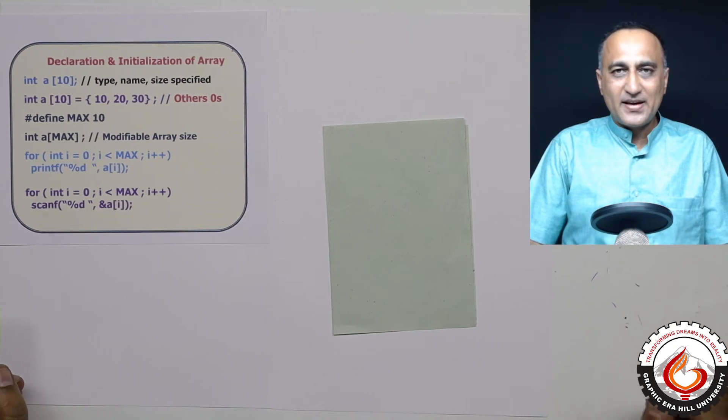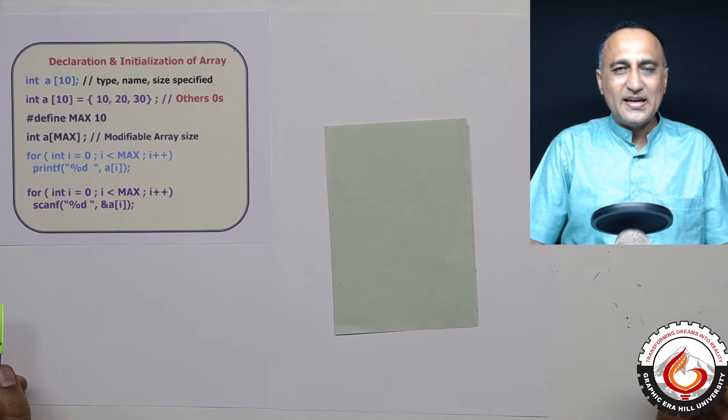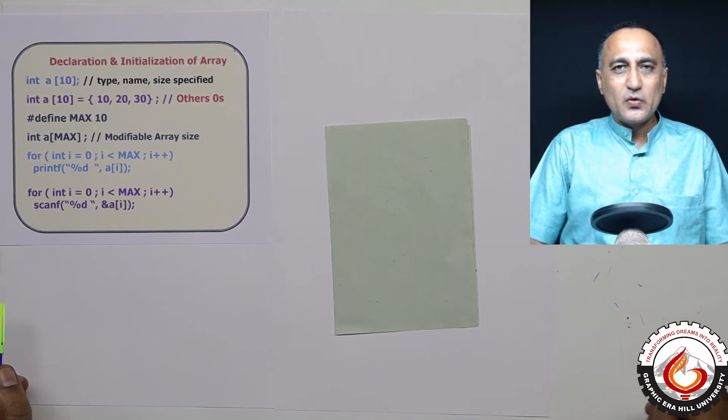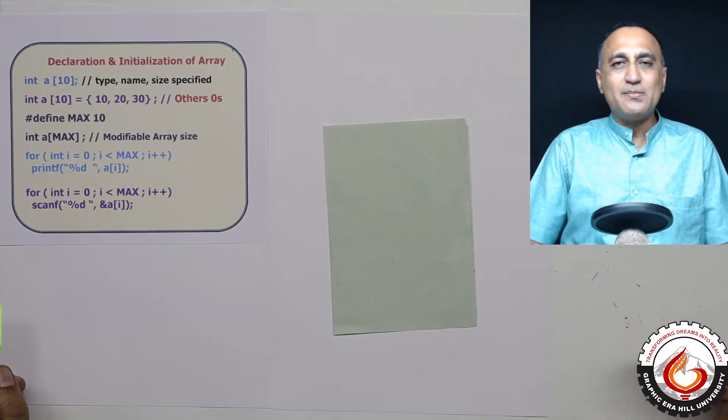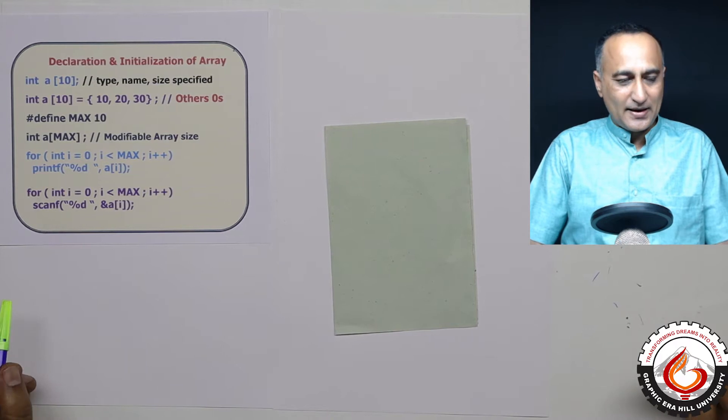Let's now talk about how we declare an array, how we initialize an array with some initial numbers, and the different ways of initializing an array. How do we read some numbers from the keyboard into an array? How do we print numbers from the array?